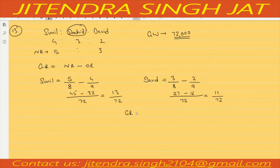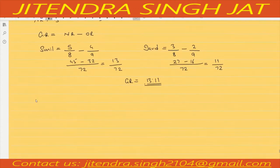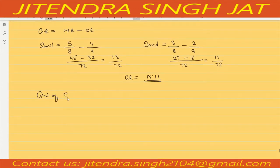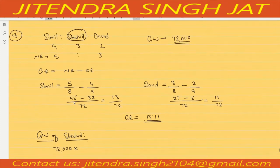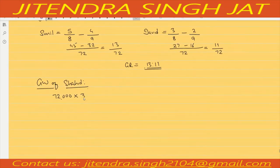So the gaining ratio between Sunil and David is 13:11. This means they will give goodwill to Shahid in the ratio 13:11. Shahid's goodwill = 72,000 × 3/9 = 24,000. So Shahid will get 24,000 as goodwill because he is taking retirement.